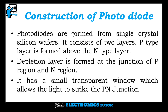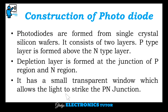Between the N region and P region we have the depletion region. Photodiodes are formed from single crystal silicon wafers. It consists of two layers — P-type layer is formed above the N-type layer. The depletion layer is formed at the junction of P region and N region. It has a small transparent window which allows the light to strike the P-N junction.